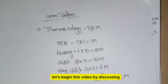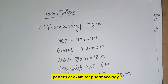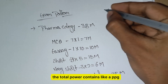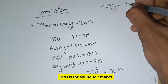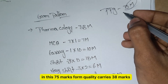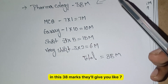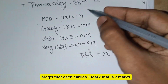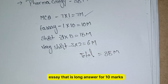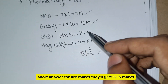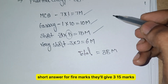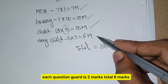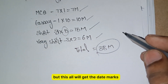Let's begin by discussing the pattern of exam for pharmacology. For pharmacology they will ask for 38 marks. The total paper — PPG — is for 75 marks. In these 75 marks, pharmacology carries 38 marks. In these 38 marks they will give 7 MCQs, each carrying 1 mark, that is 7 marks; long answer (SA) for 10 marks; short answer for 5 marks — they will give 3, totalling 15 marks; and very short answer containing 3 questions, each carrying 2 marks, total 6 marks.